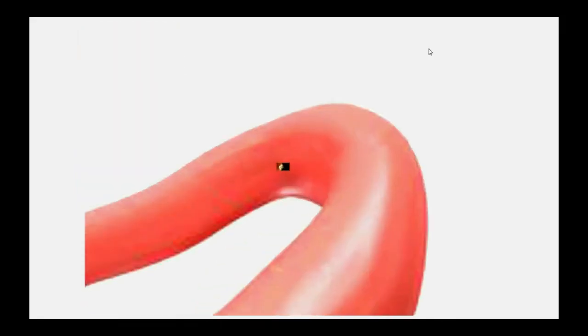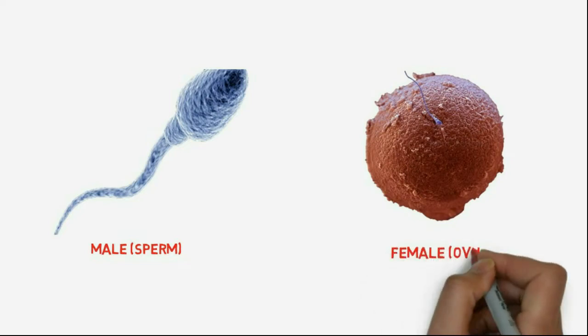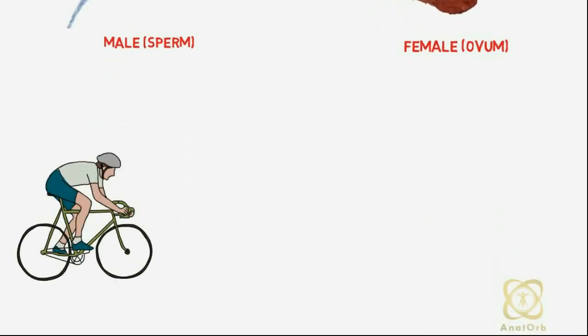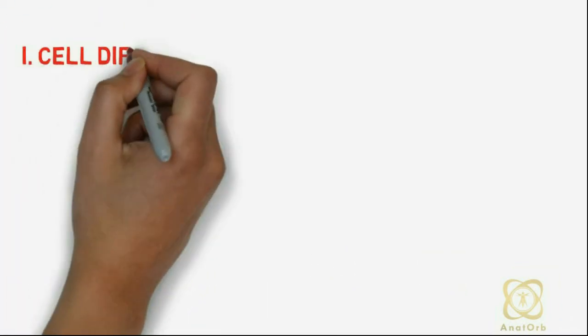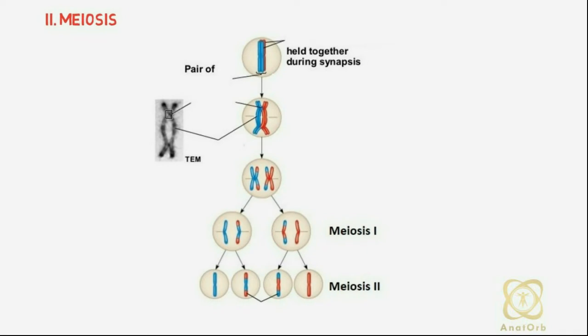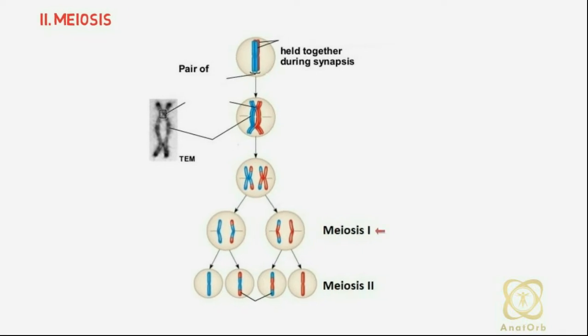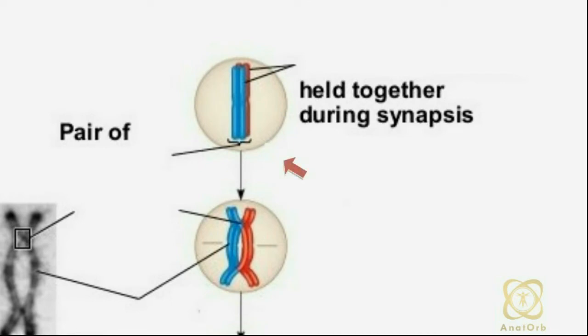In preparation for fertilization, germ cells undergo gametogenesis, which is a process that involves the production of the male and female germ cells which are required to form an individual. This process includes cell differentiation and meiosis, which is a two-stage process that reduces the number of chromosomes in the parent cell by half, thereby producing four gamete cells.